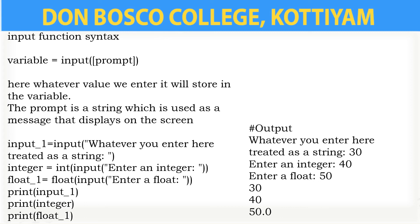We can use int() for integer conversion and float() for float conversion. Print the input variable; print within brackets 'the value of a is', comma a. It will be treating the input as a string and printing the value plus the value of that variable. The second statement will print the integer value, and the third will print the float value using decimal numbers.